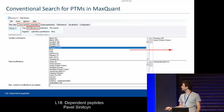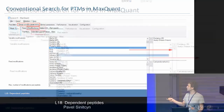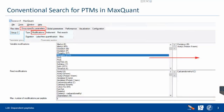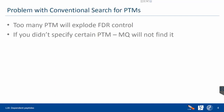How do we deal with this in MaxQuant? It's pretty simple — go to group-specific parameters, to modifications, and if you're studying a PTM like phosphorylation, you just move phosphorylation STY to the right so it's added as a variable modification. You can also add it as a fixed modification, but it really depends on the experimental setup. But there are several subtle problems.